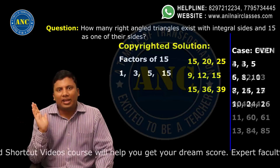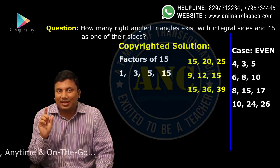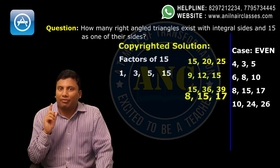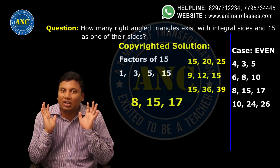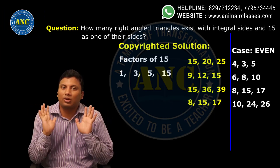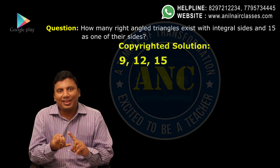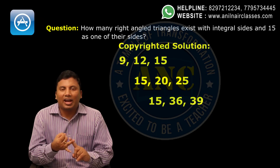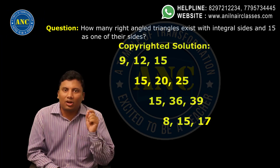Now go to the even number side case. In the even number case, is there any Pythagorean triplet with 15 as one of its sides? Yes — when we take the even side as 8: 8 squared by 4 is 16, plus or minus 1 gives the triplet 8, 15, 17. So in total, the Pythagorean triplets where 15 is one side are: 9, 12, 15 — and 15, 20, 25 — and 15, 36, 39 — and 8, 15, 17. If you know how to find Pythagorean triplets and the factors of 15, this question is very easy to solve.